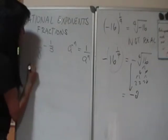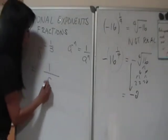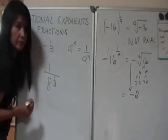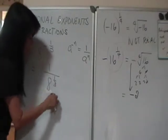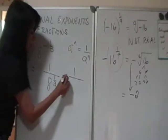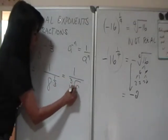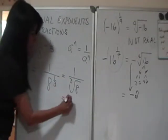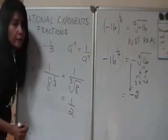Well, using the rule 8 to the negative n is equal to 1 over 8 to the n, we have to write this first as 1 over 8 to the 1/3. And now for this one, you can apply the definition, which is 8 to the 1/3 is really the cube root of 8. And so therefore, you have 1/2.